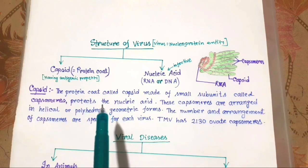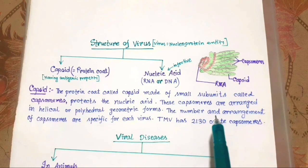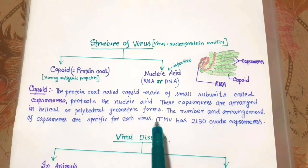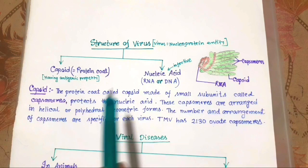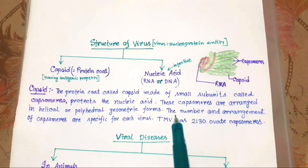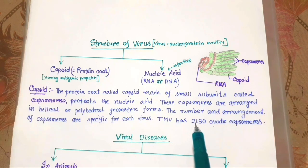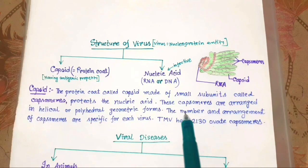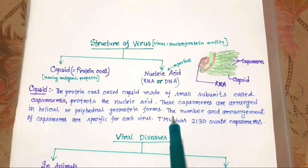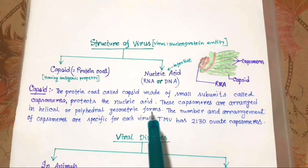The number and arrangement of capsomers are specific for each virus — this is very important. In the case of TMV, capsomers are arranged in helical form, and TMV has 2130 capsomers. Because the number and arrangement of capsomers are specific for each virus, this is how we differentiate them.